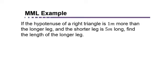It says, if the hypotenuse of a right triangle is one meter more than the longer leg and the shorter leg is five meters long, find the length of the longer leg.